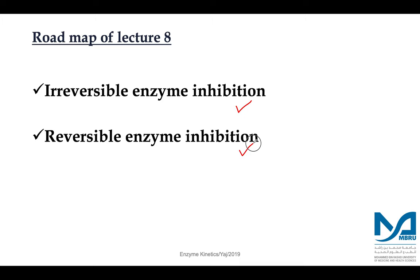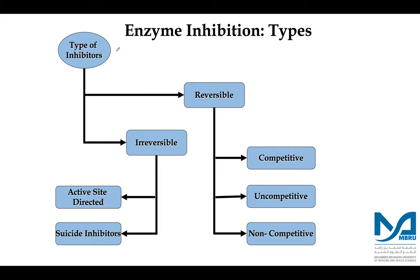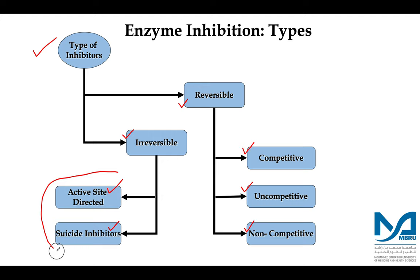In our course we have two kinds of enzyme inhibition: irreversible inhibition and reversible inhibition. This is the classification of enzyme inhibition done according to the type of inhibitors. Broadly, I can classify enzyme inhibitors into reversible inhibitors and irreversible inhibitors. Irreversible inhibitors can be further classified into active site directed irreversible inhibitors and suicide inhibitors. In our course we do not have the kinetics of irreversible inhibition.